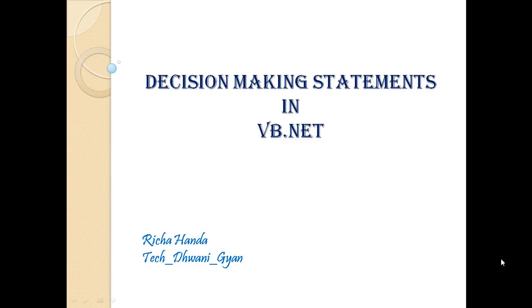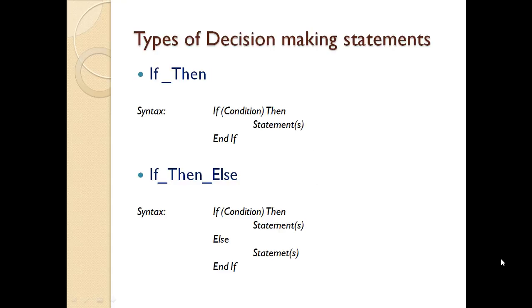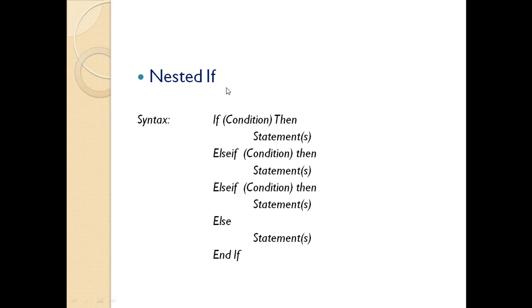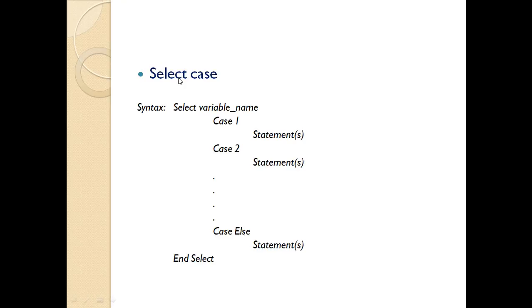Hello everyone, this is Richa Honda, welcome to my channel Tech Dhoni Jhaan. The topic we will discuss in this video is Decision Making Statements in VB.NET. There are four types of decision making statements: the If-Then statement, the If-Then-Else statement, the nested If statement, and the Select Case statement.